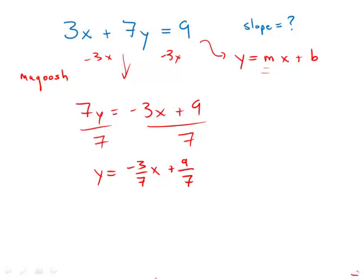Once we have it in this form, we see that this number, negative 3/7, is the slope. 9/7 would be the y-intercept if we needed that. And so the slope is answer choice B.